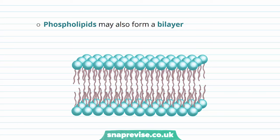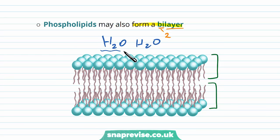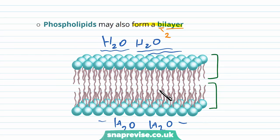Not only can phospholipids form a monolayer micelle, they can also form a bilayer. A bilayer — bi meaning two — has two layers mirroring each other. The phospholipids on one layer arrange themselves in one direction and the other layer faces them in the opposite direction, creating an aqueous environment on either side. The watery environments are wherever the heads are facing — above and below the bilayer — while the fatty acids in the middle are hydrophobic, repelling the water to the outside.